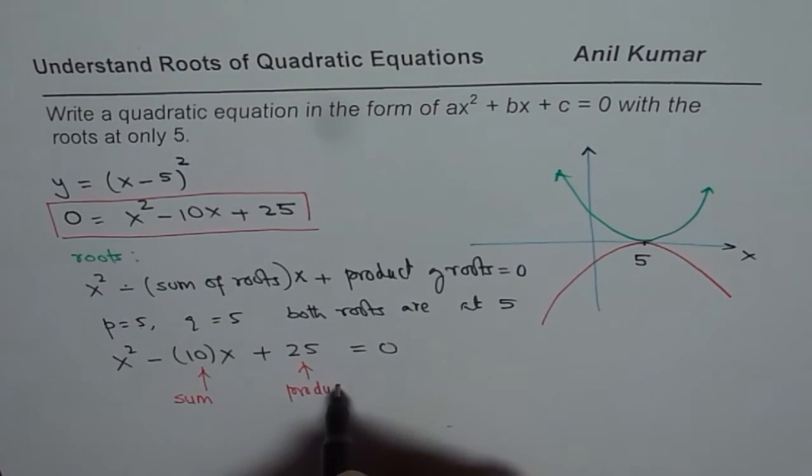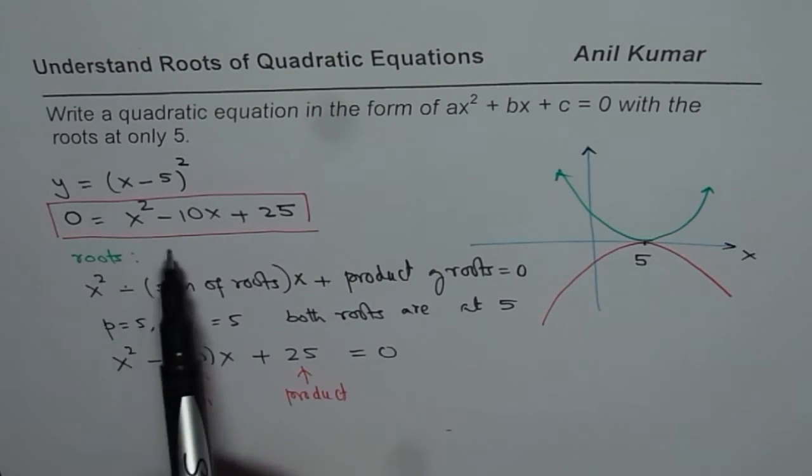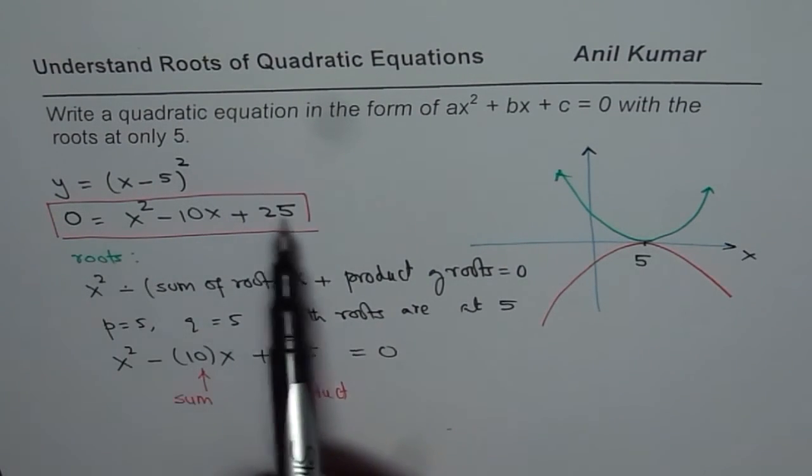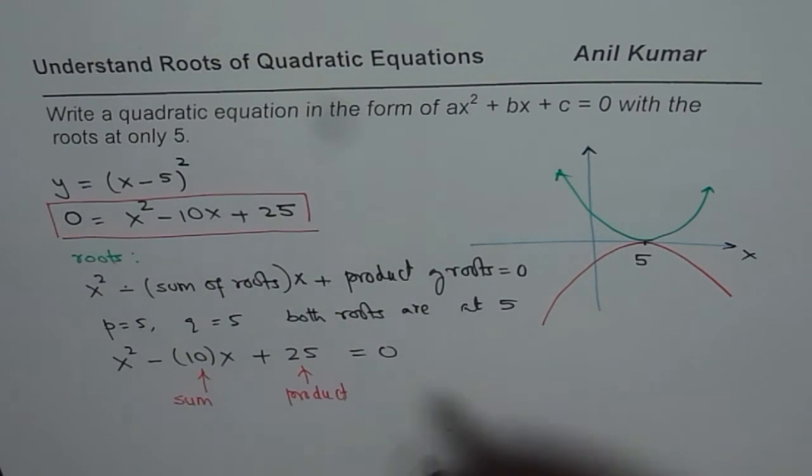I hope that makes things very simple. Now, to get different equations, we could multiply our equation by any number, all the terms. Let us say by 2, by 3, by minus 5 or whatever.